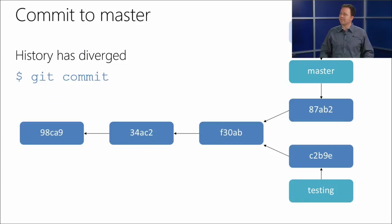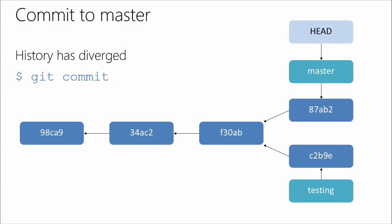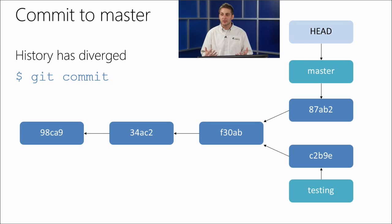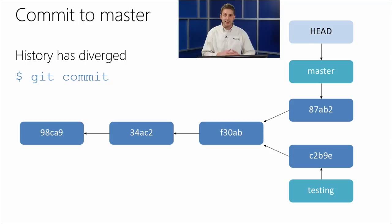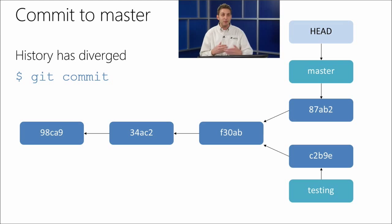When we commit to master, we have our first period of complexity. When we committed to master, we can see that the history diverged — we're not in a straight line anymore. When we check out master and push a new commit, we now have divergence because we have changes in testing that master hasn't incorporated yet, and vice versa. That's where the histories diverge.